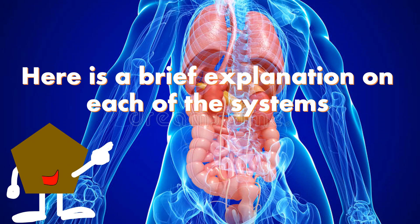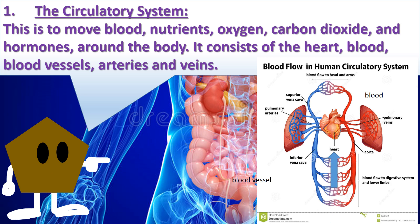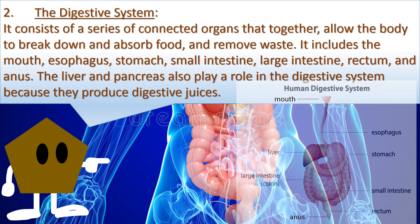Here is a brief explanation on each of these systems. 1. Circulatory system: this is to move blood, nutrients, oxygen, carbon dioxide, and hormones around the body. It consists of the heart, blood, blood vessels, arteries, and veins.